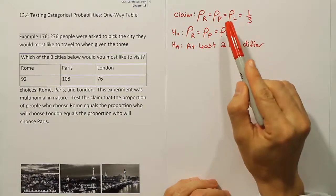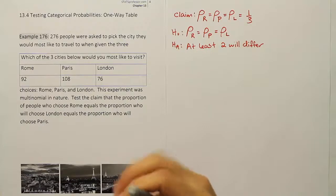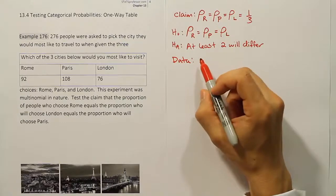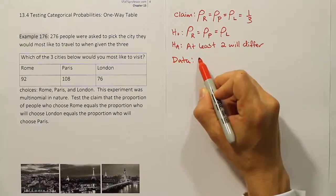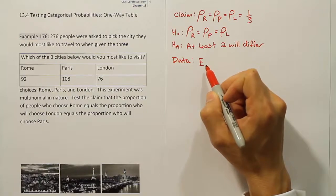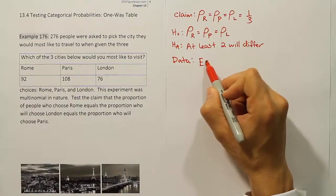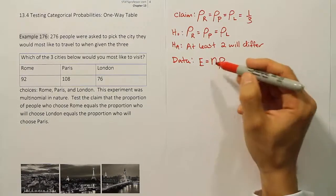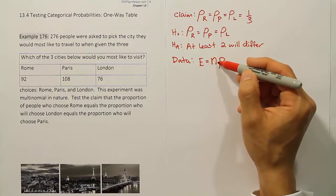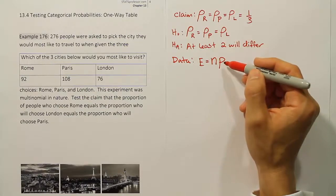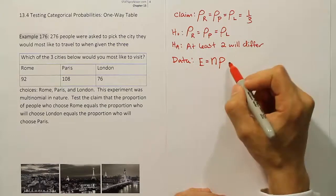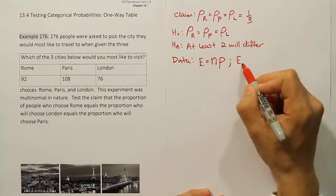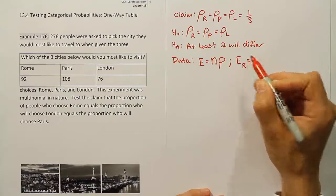So we have our claim, our H0, and our HA. Let's move on to the data step. In the data step we're going to talk about the expected value — we need to figure out the expected value for each cell. The expected value, as in binomial probability, is just the formula n times p: the sample size times the proportion or probability. For example, the expected value for the Rome cell — how many people you expect to end up there — is n times p_R.